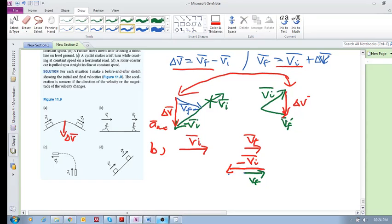Head to tail method, so that's minus vi, and then you're going to get delta v. So v final minus v initial must equal delta v. Delta v is pointing in that direction which makes sense, because your acceleration is delta v over delta t, so he has a negative acceleration.